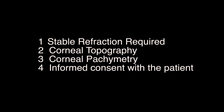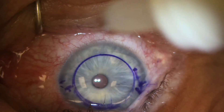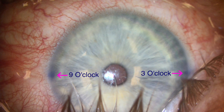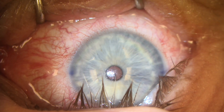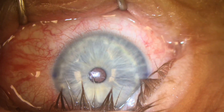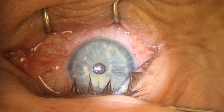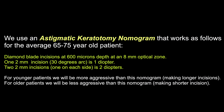Preoperatively, we need a rock-solid refraction. Corneal topography is also required. We inform the patient of the risks, benefits, and alternatives of AK, and the likelihood of achieving a refractive outcome that the patient will be satisfied with. It only takes about three minutes to perform this painless procedure. We instill three drops of Proparacaine anesthetic, then place a mark at the three and nine o'clock positions of the limbus while the patient is sitting upright. Then the patient is reclined and positioned under the operating microscope. An eyelid holder is placed to keep the eyelids apart. The patient is then asked to look straight ahead at a fixation light.